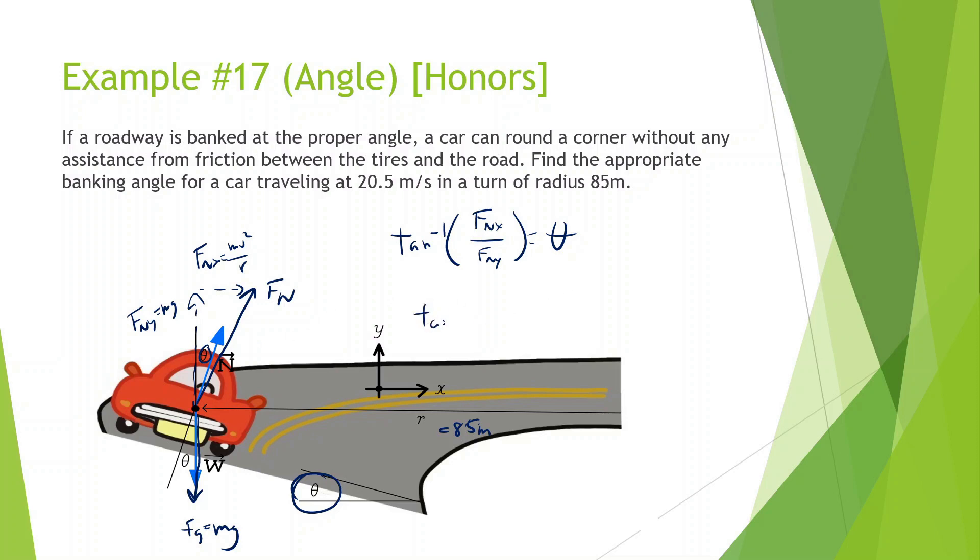So let's kind of write that down again. Tan inverse, and it's going to be mv squared, which is 20.5 squared, divided by r which is 85, divided by mass times gravity, 10. So mass cancels out, and we can figure what this theta is by just plugging all this in. Let's do this. 20.5 squared divided by 85 times 10, 850, and we could do tan inverse of that number, and we get around 26.3 degrees.